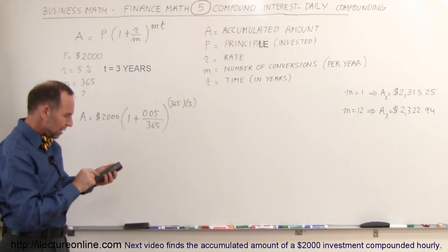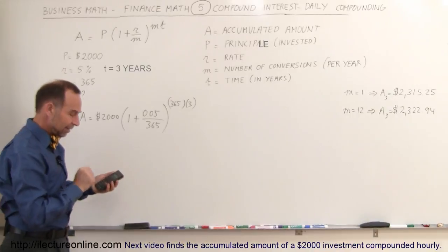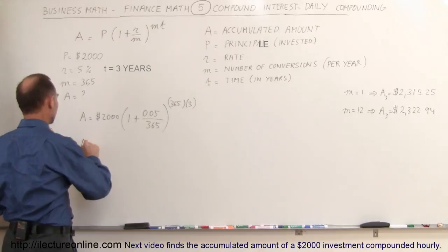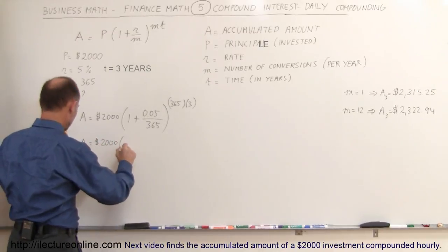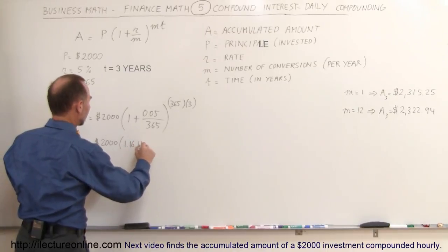then we go 3 times 365, and you should end up with something that looks like this. So you have the accumulated amount equals 2,000 times the quantity 1.822305.